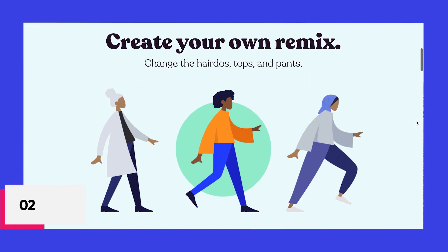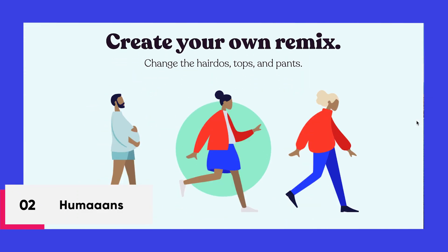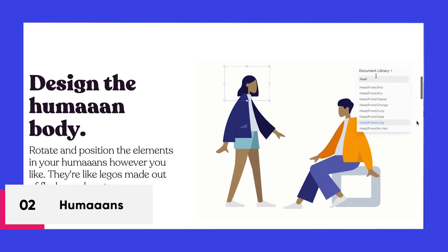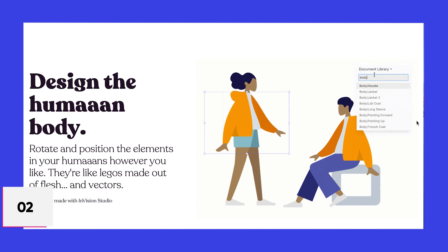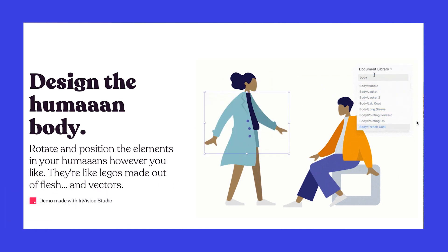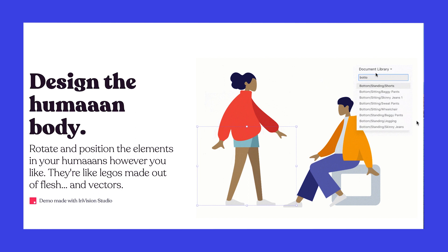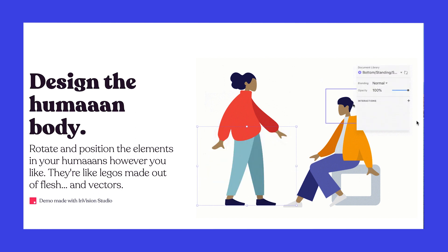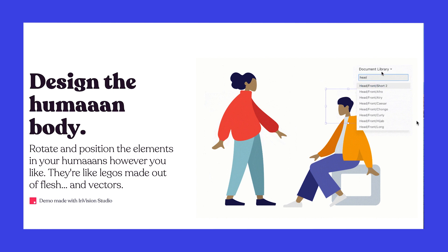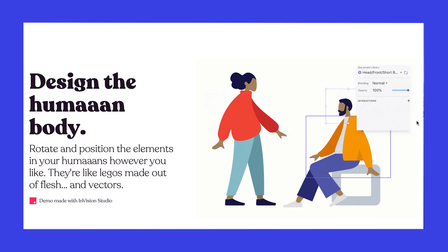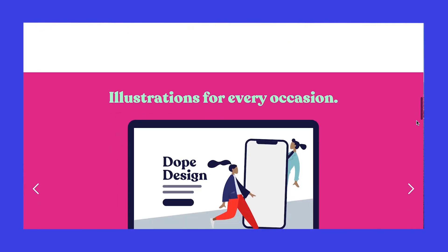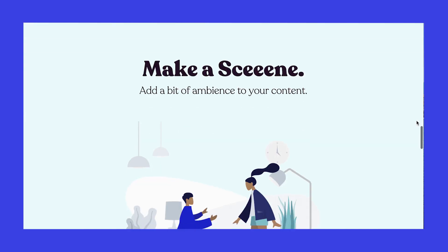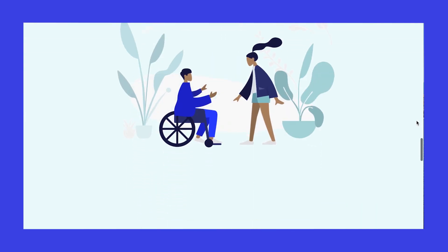Next up is Humans, curated by Pablo Stanley. Humans is a design library containing illustrations of people. Here you will be able to customize the position, color, clothing, hairstyle and background of the illustrations, hence giving you complete control over them. Assets provided on this website are free to download and modify but you are required to give attribution credit.